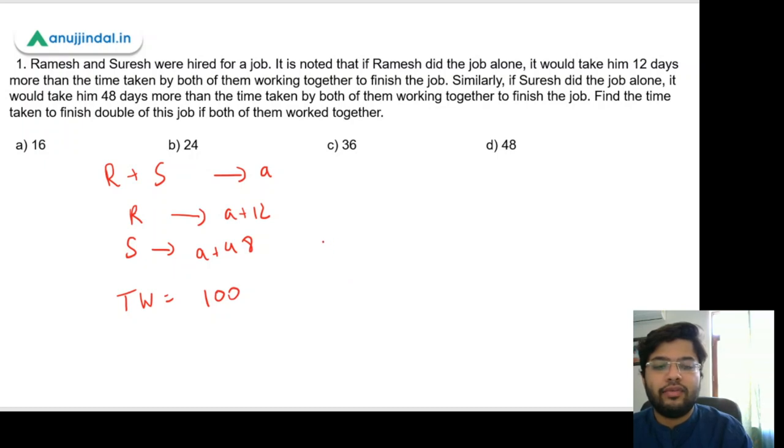Now we know that we can compare the efficiencies of Ramesh and Suresh. So the efficiency of Ramesh and Suresh together would be equal to the sum of their efficiencies. So 100/a, this is the efficiency of Ramesh and Suresh together, would be equal to the sum of the individual efficiencies: 100/(a+12), this is Ramesh's efficiency, and 100/(a+48), this is Suresh's efficiency.